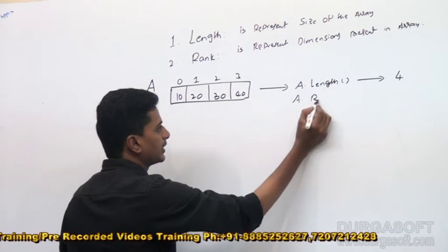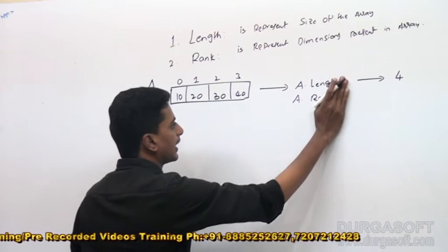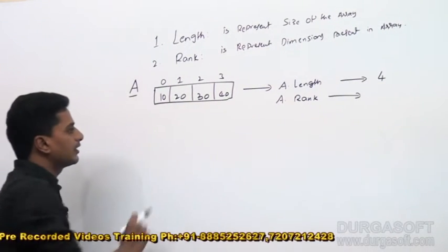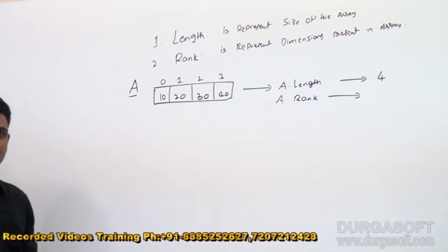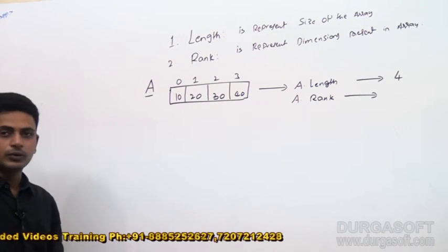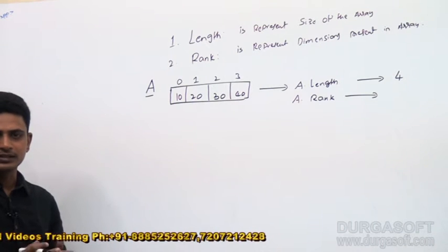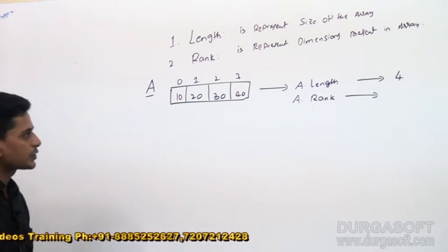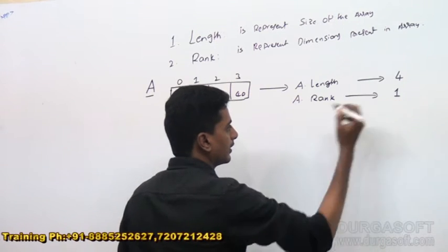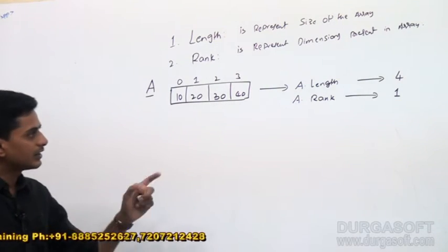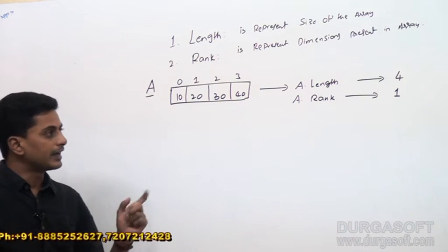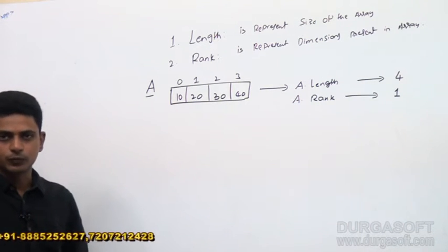If I do A.Rank, the rank of a single-dimensional array is always 1. Why? Because it has only one dimension — either a row or a column. So A.Rank is always 1. The length of a single-dimensional array is the size of the array and the rank is 1.